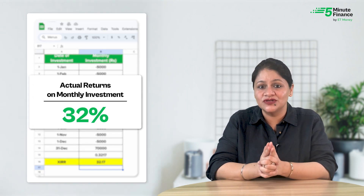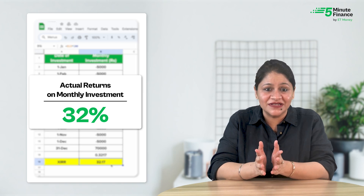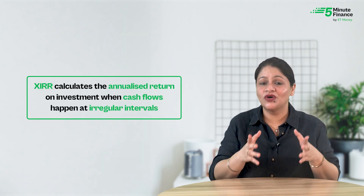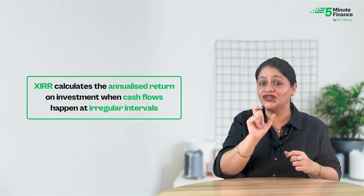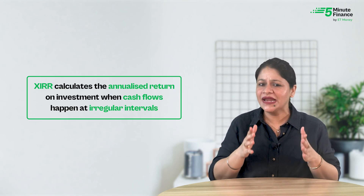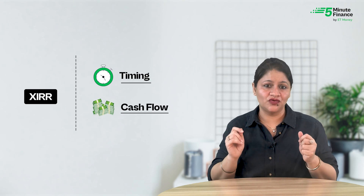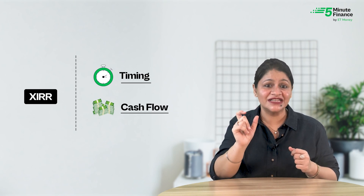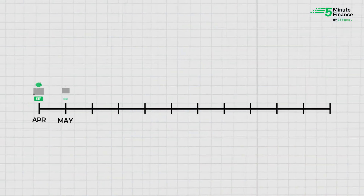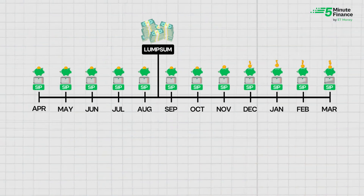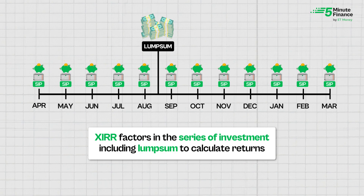So you can see my actual returns on this monthly series of investments is 32%. XIRR — Extended Internal Rate of Return — is a method used to calculate the annualized return on investment when cash flows happen at irregular intervals. It takes into account all the cash inflows and outflows along with the dates on which they occurred, making it a more accurate method for investments with irregular cash flows. And it works not only for a single scheme — suppose you invest a lump sum in the same fund whenever you have extra savings, you can add those entries in Excel with date and amount, and the XIRR formula will handle that as well.